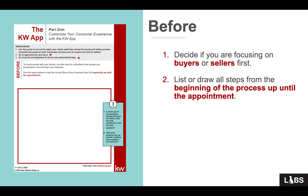Here's the set of instructions: use this guide to map out the steps your clients will take during the buying and selling process. Print the guide for your seller process and again for your buyer process. Go to agent.kw.com and log in, then go to go.kw.com/appsetup to set up your personalized app. Before communicating with your clients, you first need to understand how people and transactions move through your business. Use the space below to map the current flow of your business from a buyer or seller lead up until the appointment — not the whole process from A to Z, but everything that happens up until you get the appointment.